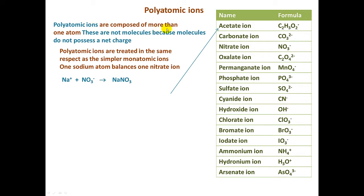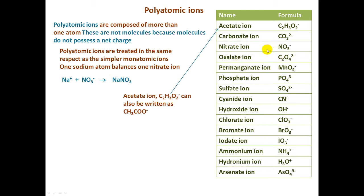Polyatomic ions are composed of more than one atom. Here we have a table of polyatomic ions. Notice that they are all charged. Most of the polyatomic ions on this table are negatively charged, with the exception of the ammonium ion and the hydronium ion. We treat polyatomic ions in the same respect as the simpler monatomic ions when we're writing formulas for ionic compounds. Polyatomic ions do combine with metals to form ionic compounds.